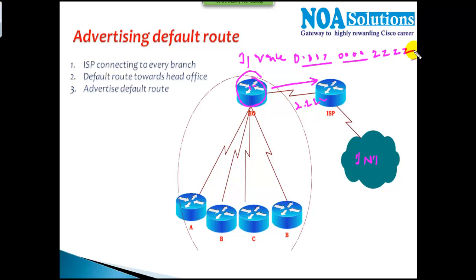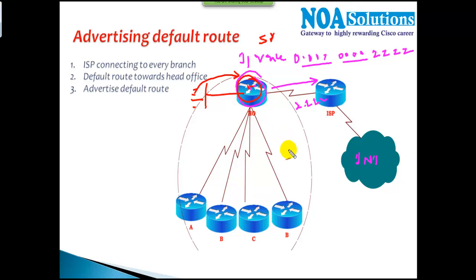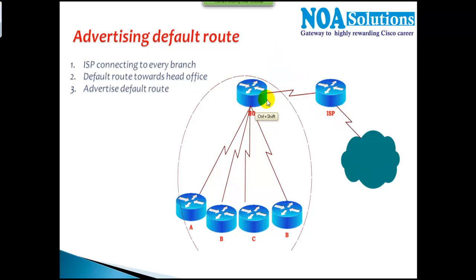Once we configure this command, whatever resources or users in the LAN want to access the internet — yahoo.com, google.com — they simply send it to the gateway. The router maintains one default route, shown as S*, which says any unknown packet — Yahoo, Google, Gmail — will be forwarded to the ISP, which routes it to the specific server. This is what we learned in basic CCNA: configuring a default route gives access to any unknown destination. But what if I need the same thing for my branch offices?